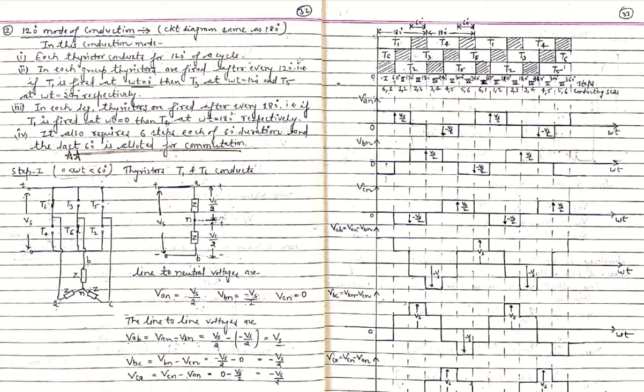Looking at the timing sequence diagram: T1 starts conducting at 0 degrees and in 180-degree mode conducts up to 180 degrees, but in 120-degree mode T1 conducts only up to 120 degrees. The hatched area of 60 degrees is allotted for commutation, during which no thyristor from the positive group is conducting. So the last 60 degrees is always allotted for commutation in 120-degree mode of conduction.